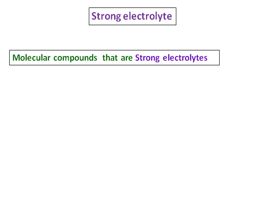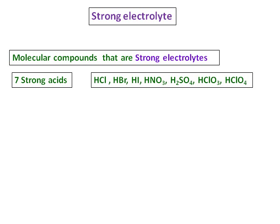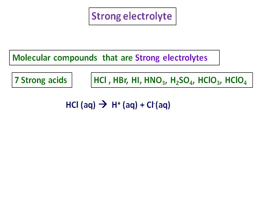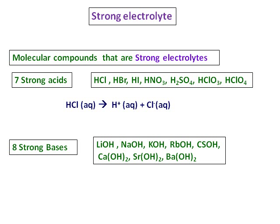Apart from ionic compounds, some molecular compounds are also strong electrolytes — specifically the seven strong acids. The seven strong acids are HCl, HBr, HI, HNO3, H2SO4, HClO3, and HClO4. All of these dissociate completely to give hydrogen ions and the corresponding anions. The eight strong bases are also strong electrolytes.